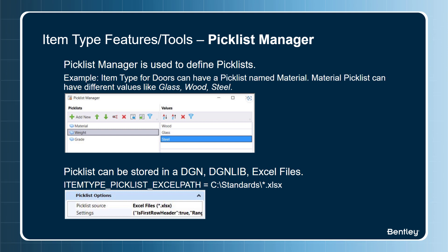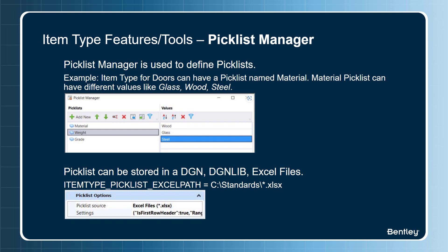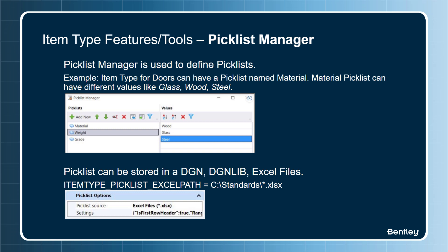In this example, we have a door of different materials like glass, wood, and steel. These unique material values can be added as a picklist. You can now store and access picklists directly from an Excel sheet. This new capability makes it much easier to manage and work with large amounts of item type data.